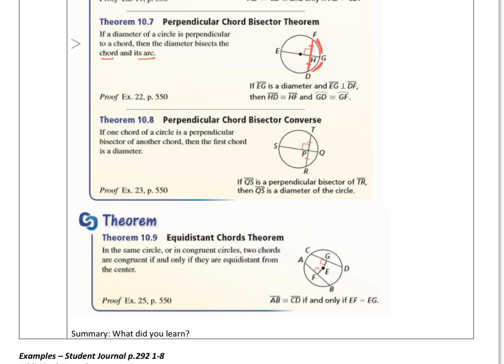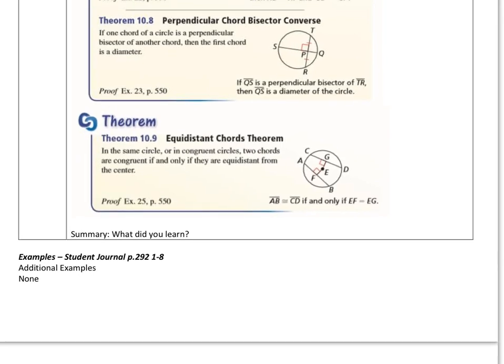And then the next one is equidistant chords. Here's how I can tell if chords have the same length. In the same circle or in congruent circles, two chords are congruent if and only if they are equidistant from the center.